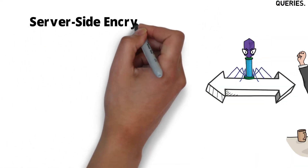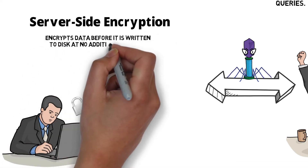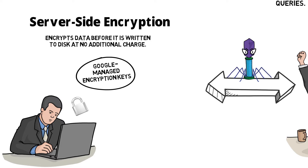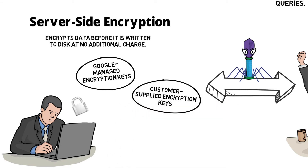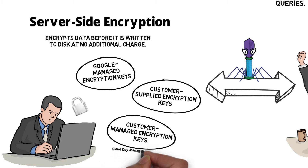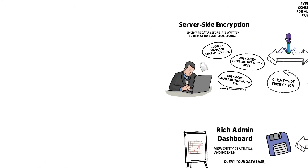Let's move to server-side encryption. Data is encrypted before it is written to disk at no additional charge. There are multiple encryption options: Google manages encryption keys by default; customer-supplied encryption keys allow users to create and manage their own keys for server-side encryption; and customer-managed encryption keys let users generate and manage keys via Cloud Key Management Service. Client-side encryption is also possible, meaning data is already encrypted from the client-side before reaching the Cloud Datastore server.